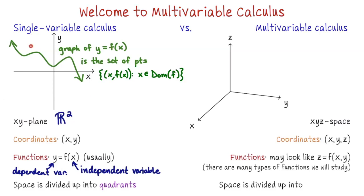Of course, when we look at the xy-plane, we have the familiar four quadrants: the first, second, third, and fourth quadrant. Let's take some of these ideas and see how they go up to three-dimensional space, which is going to be the space that we work in very often when we're studying multivariable calculus.